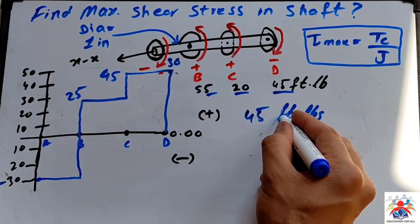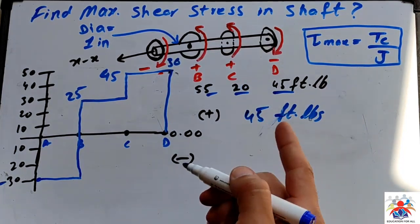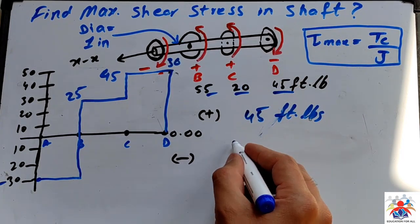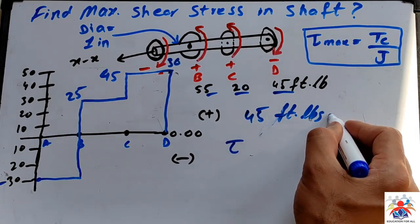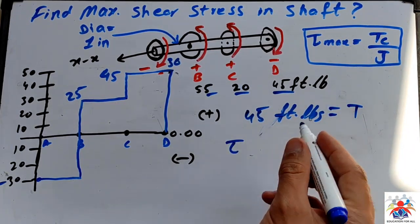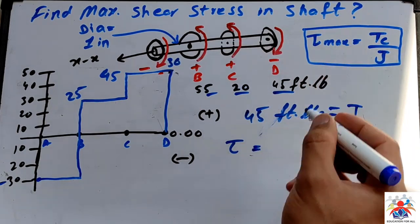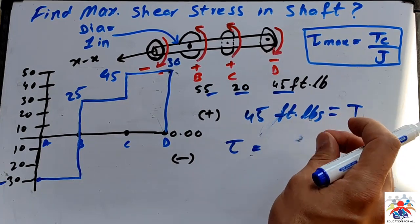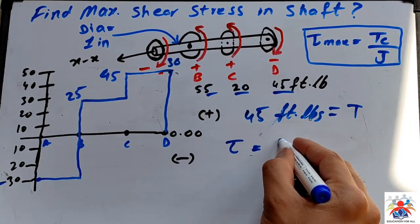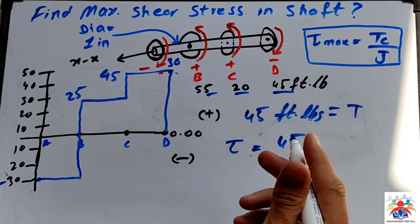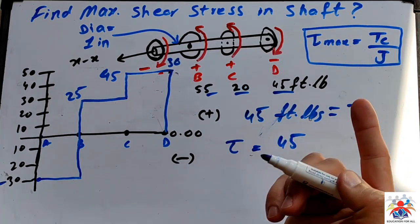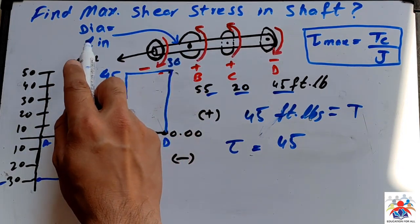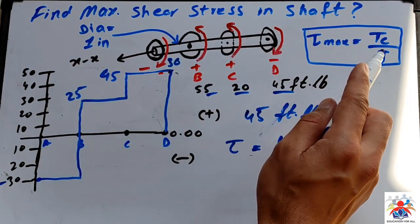Now we have to use this value into this formula. How do we do that? Tau max is equal to Tc over J, so tau maximum is equal to Tc.